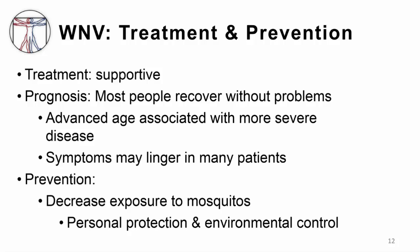Treatment is largely supportive — adequate oral intake and pain and fever control. There are no antivirals for this infection. Overall the prognosis is very good and most people recover without problems. Advanced age is associated with more severe disease like poliomyelitis or encephalitis, and patients who recover from West Nile encephalitis or poliomyelitis may be left with residual neurologic deficits. Prevention focuses on decreasing mosquito exposure through personal protection and environmental control using insecticides.